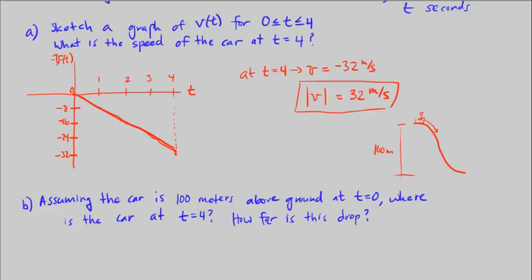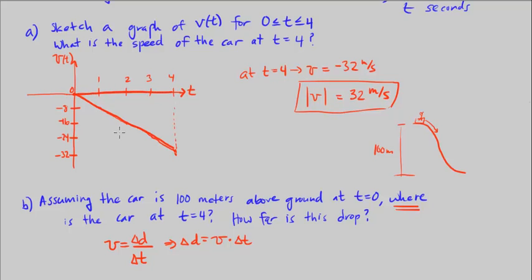We know that velocity equals change in distance over change in time. So if we want to solve for distance, delta D equals V times delta T. That means we're multiplying our x-axis by our y-axis, which gives us the area under the curve — the area under our velocity curve.